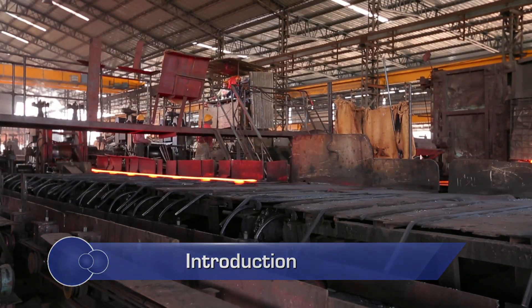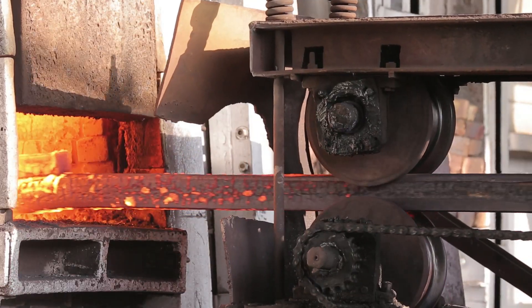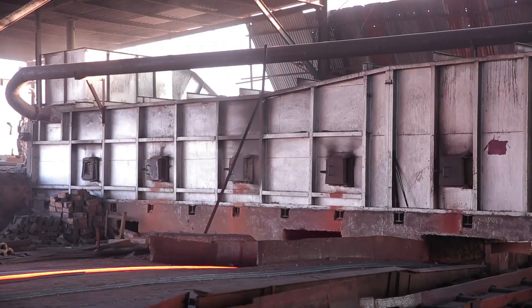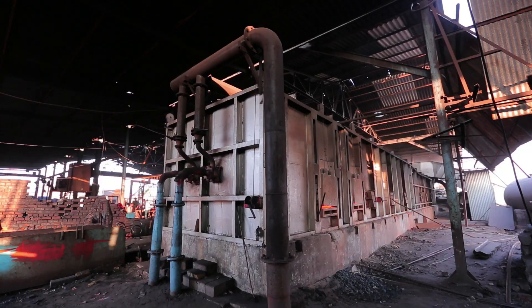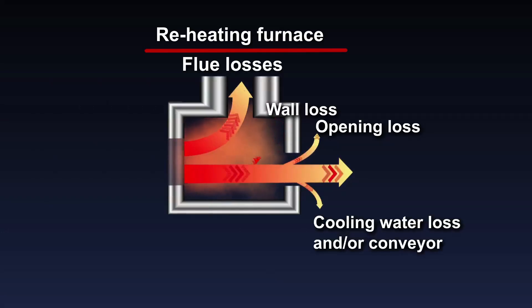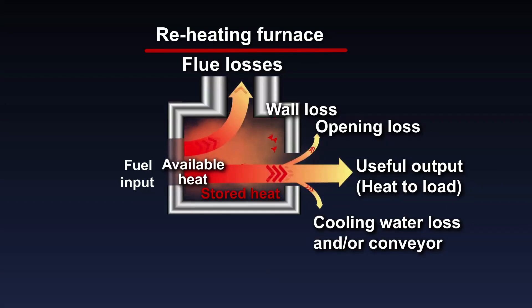Most of the steel rerolling units use top fired pusher type reheating furnaces with solid, liquid, or gaseous fuel. In a typical furnace, only 30 to 40 percent of the total heat input is converted to useful heat; the rest of the energy is lost through different areas and forms. The waste flue gas loss forms the major loss in a reheating furnace, accounting for 30 to 35 percent of the total heat input.